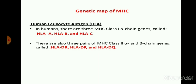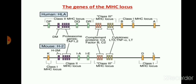In humans there are 3 MHC class 1 alpha chain genes called HLA-A, HLA-B, and HLA-C. There are also 3 pairs of MHC class 2 alpha and beta chain genes called HLA-DR, HLA-DP, and HLA-DQ. This is the genetic map of MHC present on chromosome number 6 in the human being. Chromosome number 6 in humans represents the HLA molecules of MHC, and chromosome number 17 in mice represents the H2 molecules.